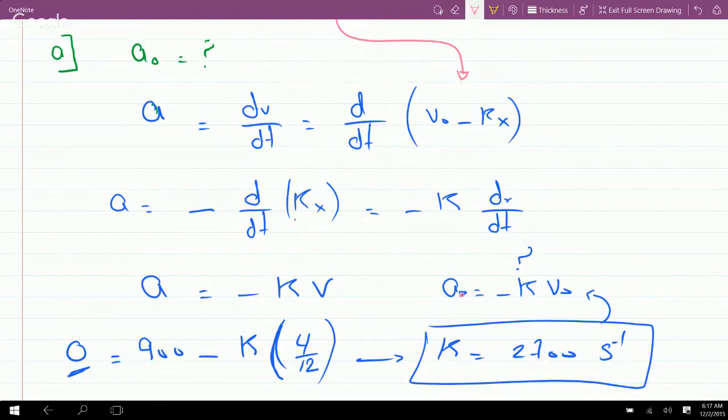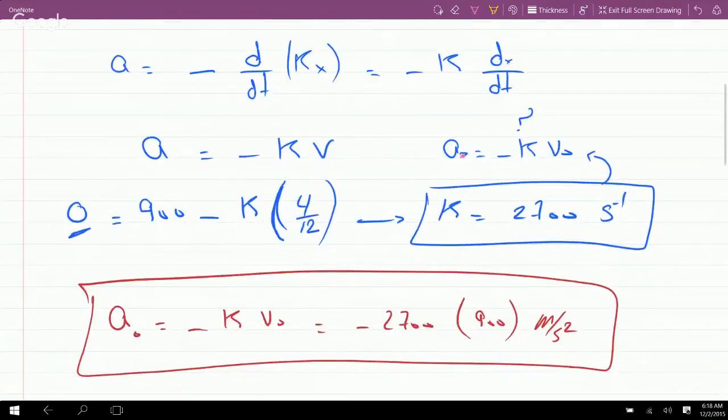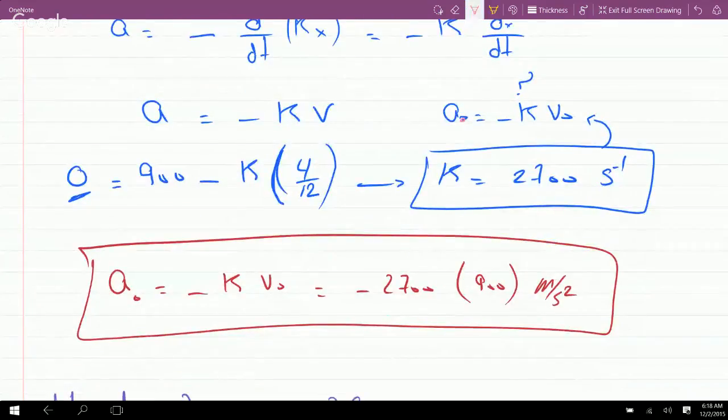So I plugged in 0 for v, I'm given the initial velocity to be 900, and 4 inches I can change to feet so the units are consistent. So I can divide by 12. Solving for k here...